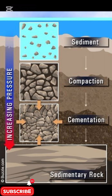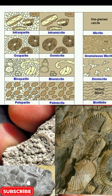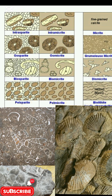Sedimentary structures include bedding and layering, visible in clastic rocks such as sandstone layers. Cementation occurs when grains are bonded by silica, calcite, or iron oxide. Fossil content represents biogenic structures, commonly found in shale and limestone.